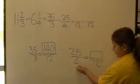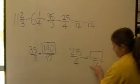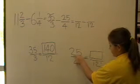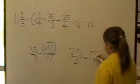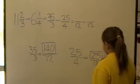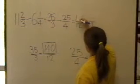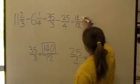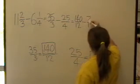And then we've times this denominator by 3. And then so 25 times 3 is 75. So 140 on 12 and 75 on 12.